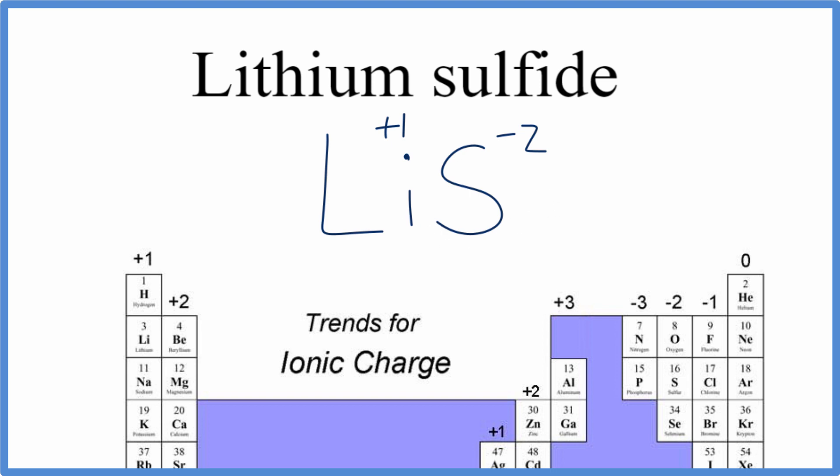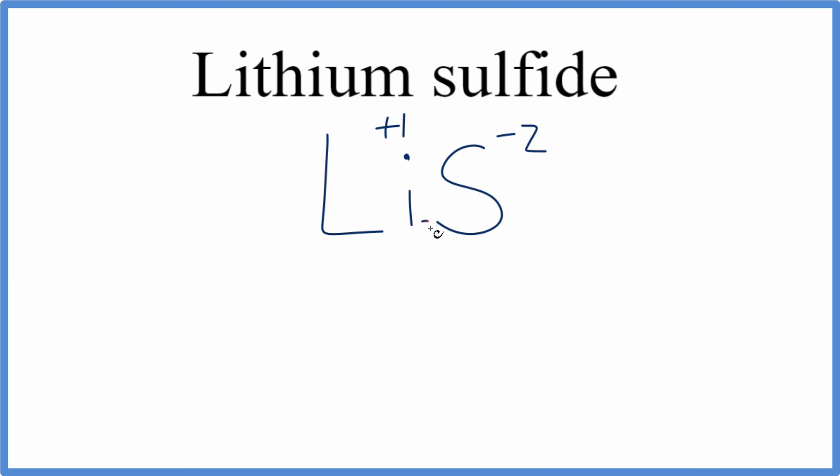What we can do is we can change the subscript here on the lithium to balance things out. So if I put a two here after the lithium, I have two times plus one. That gives me plus two, and that will cancel out the minus two.